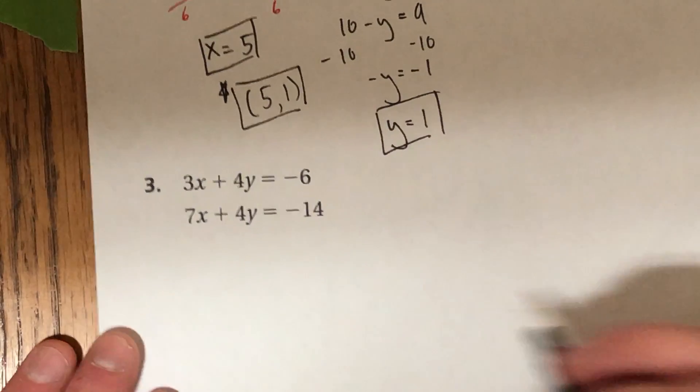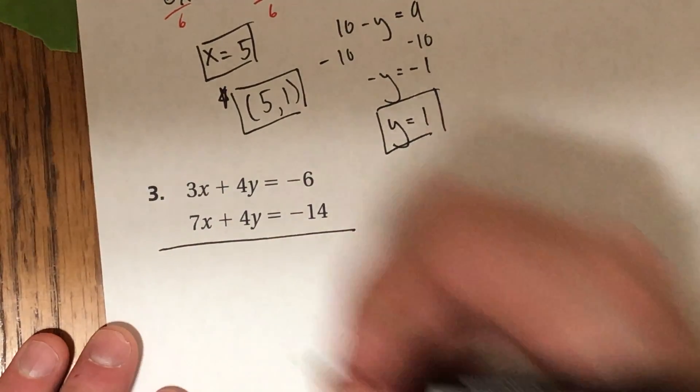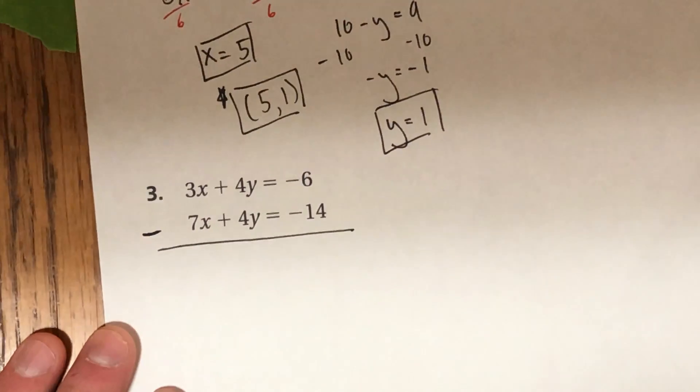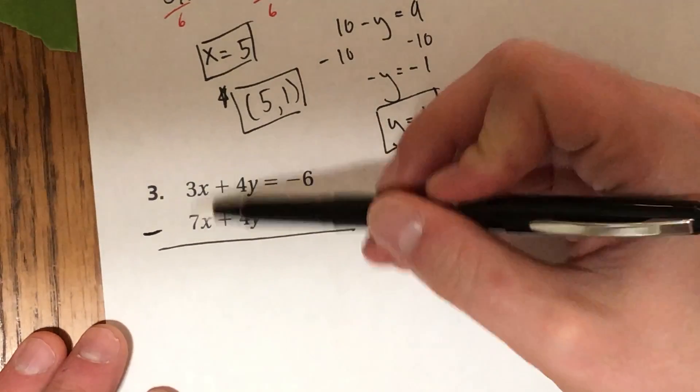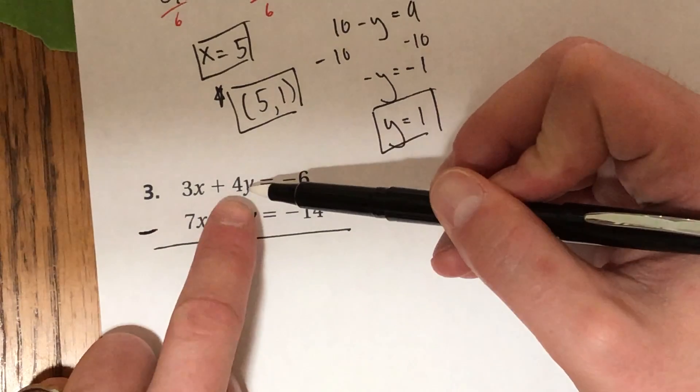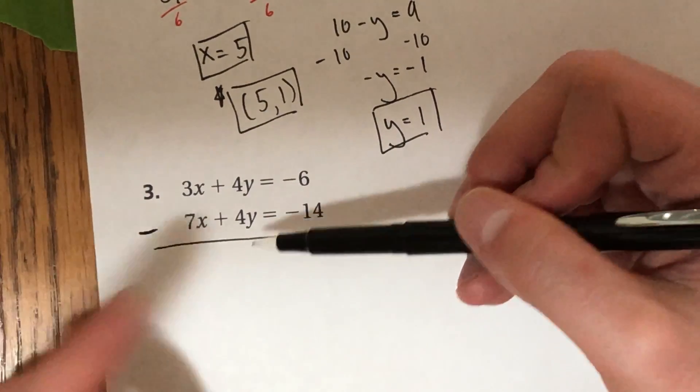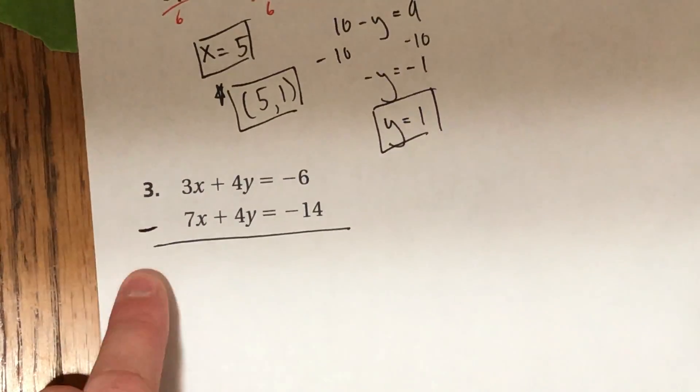Now down here for number 3, I'm going to make this suggestion to you. Subtraction. And that's because if you were to add these together, nothing would be eliminated. 4y plus 4y would be 8y. So for that reason, we're going to go ahead and subtract all the way around.